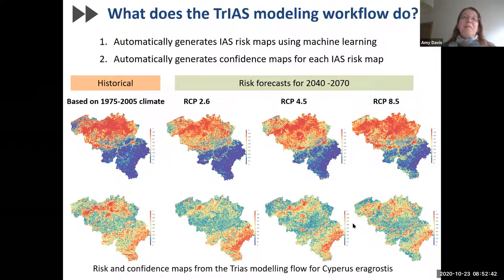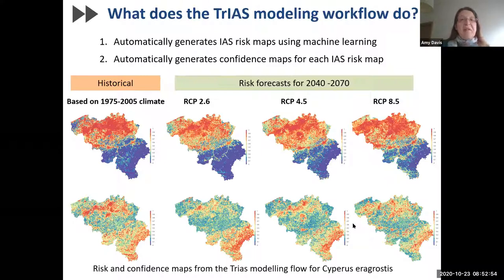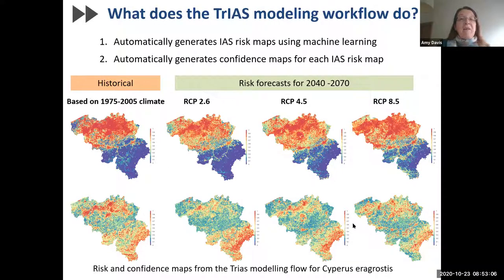Now I want to tell you about the top seven best practices that the Trios modeling flow performs automatically. First, it generates invasive alien species risk maps under scenarios of future climate change using an ensemble of machine learning algorithms. Combining predictive outputs from multiple algorithms into a single ensemble model reduces variability and uncertainty and often results in higher accuracy. You can see the results of the risk maps here for historical climate and each RCP future scenario.